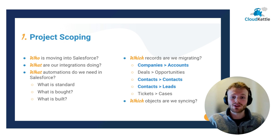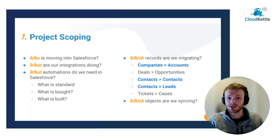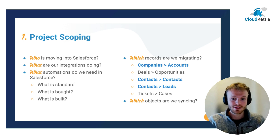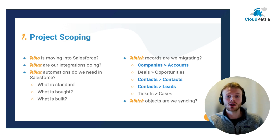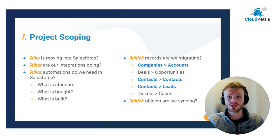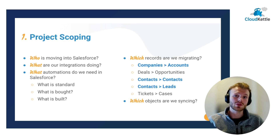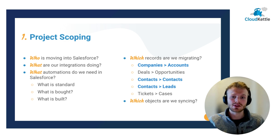When it comes to migrating data, what objects are we migrating? Four common objects to migrate are companies, deals, contacts, and tickets. Of those objects, which records do we care to migrate? Sure, we might want deals, but do we care for a deal that was closed and lost over eight years ago? And once we've moved those records over, which records are we syncing between HubSpot and Salesforce — again, if we're keeping HubSpot around?